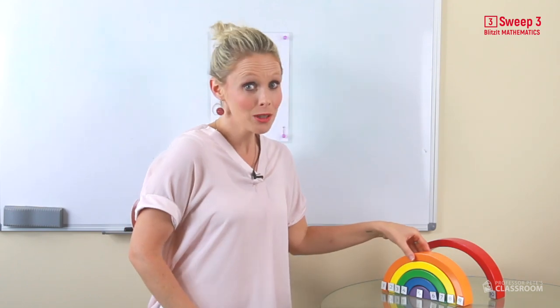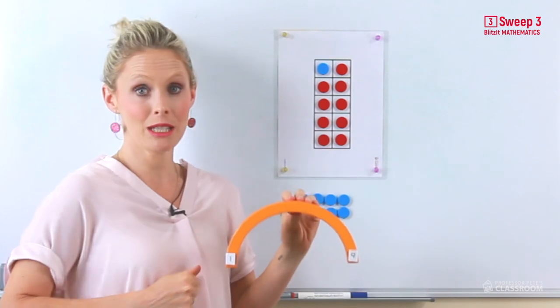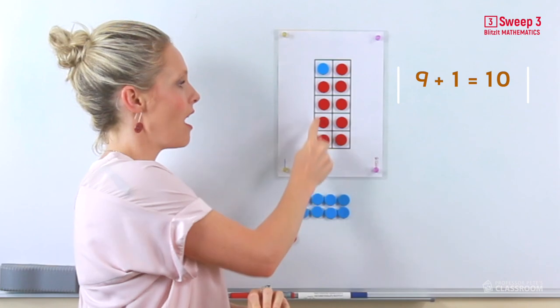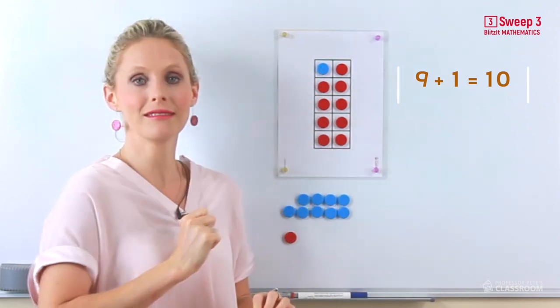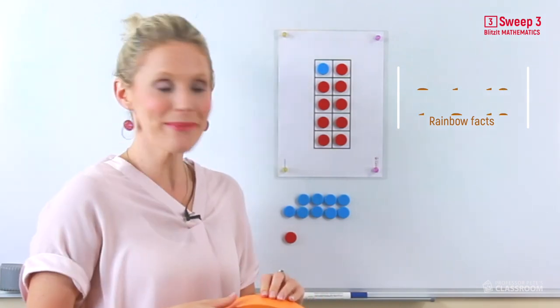Now it's time to look at our next rainbow number fact. Here we can see it on the tens frame as well as on our rainbow. Here we have 9 add 1 and 1 add 9. Easy peasy.